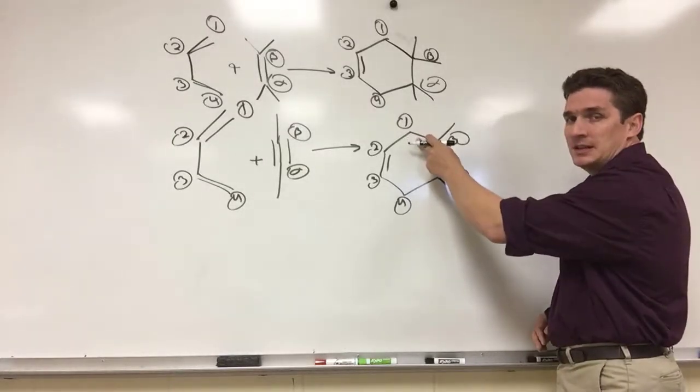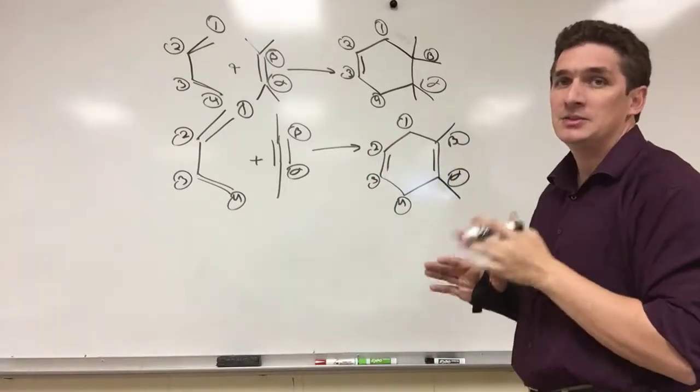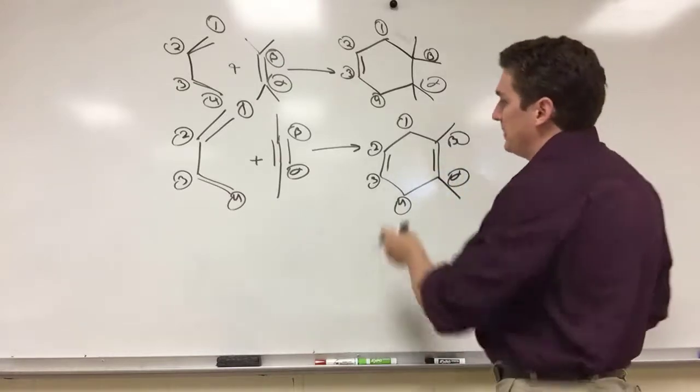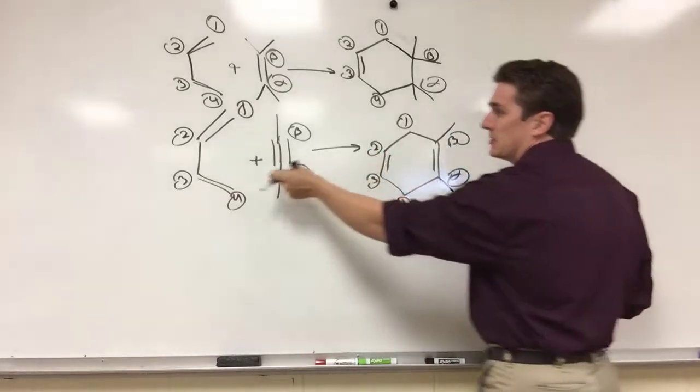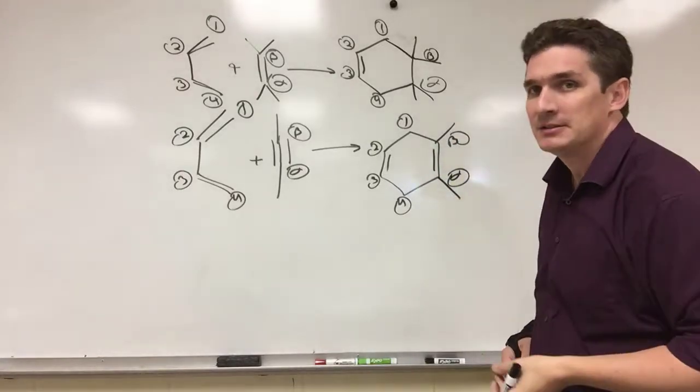When you form your ring, the carbons involved in the diene, one, two, three, four, and the two carbons involved in your alkyne, this will give you an idea as to where they are. For alkyne addition by Diels-Alder, you're going to have a double bond between the second and third carbons in the diene, and between the two carbons that made up the triple bond in the original alkyne.